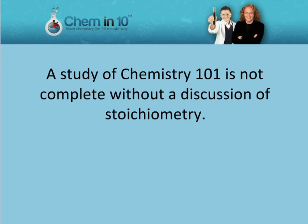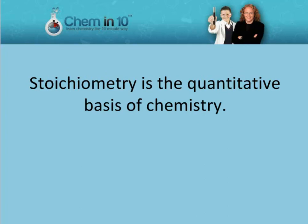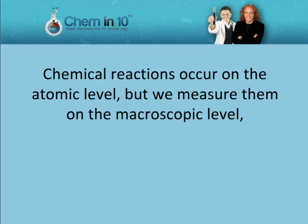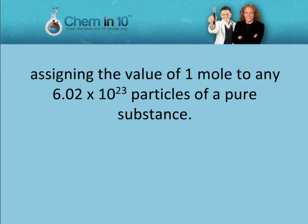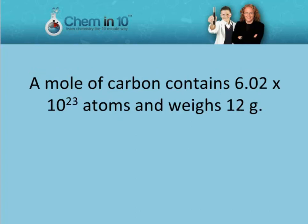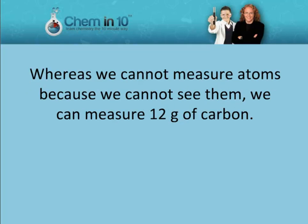A study of Chemistry 101 is not complete without a discussion of stoichiometry. Stoichiometry is the quantitative basis of chemistry. Chemical reactions occur on the atomic level, but we measure them on the macroscopic level. A mole of carbon contains 6.02 times 10 to the 23 atoms and weighs 12 grams. Whereas we cannot measure atoms because we cannot see them and they're just too small, we can measure 12 grams of carbon.